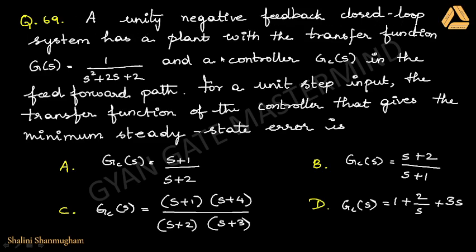Coming to the 69th question: a unity negative feedback closed loop system has a plant with transfer function G(s) = 1/(s² + 2s + 2) and a controller Gc(s) in the feed-forward path. For a unit step input, find the transfer function of the controller that gives the minimum steady-state error.